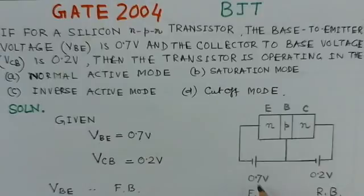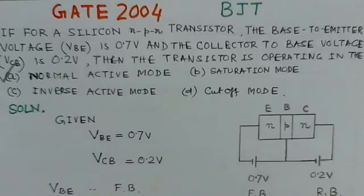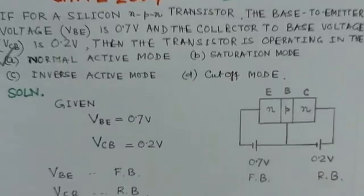where the input junction is forward biased and the output junction is reverse biased, is for the normal active mode of a transistor. So normal active mode of a transistor, this is option A, is the right option here.